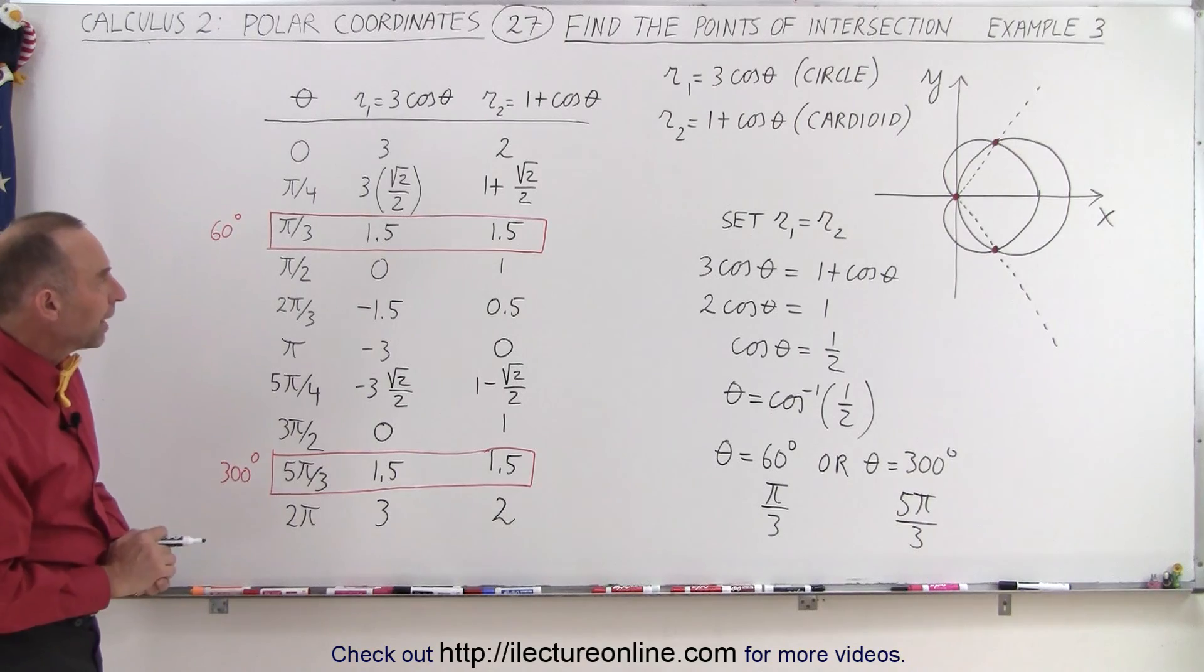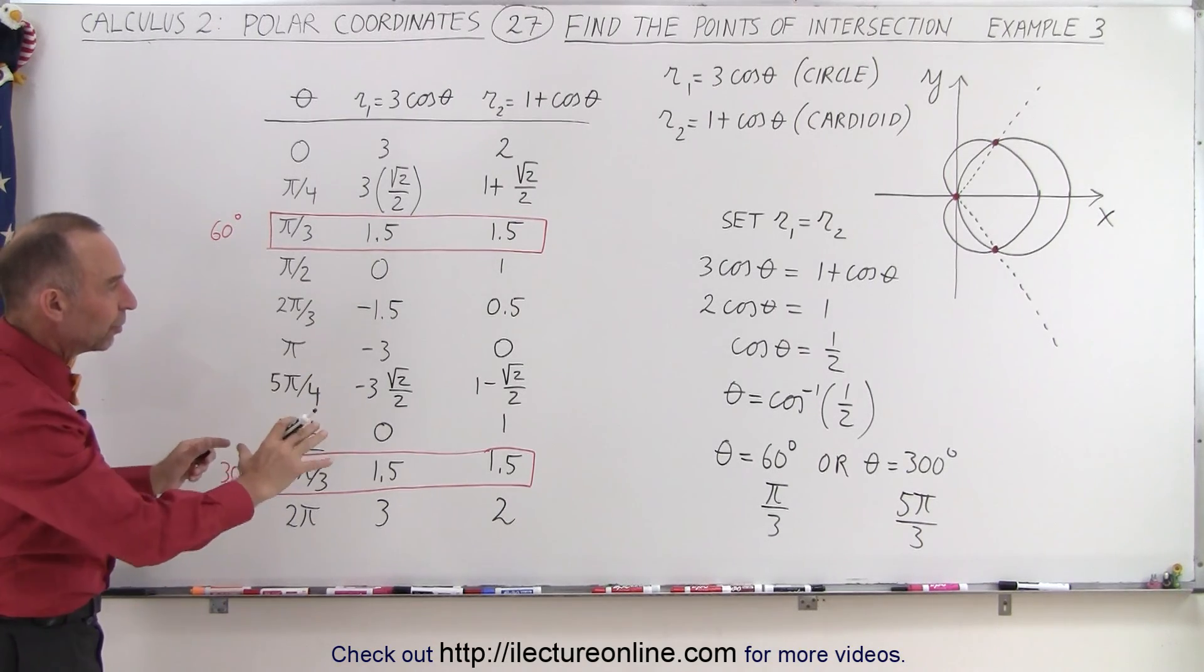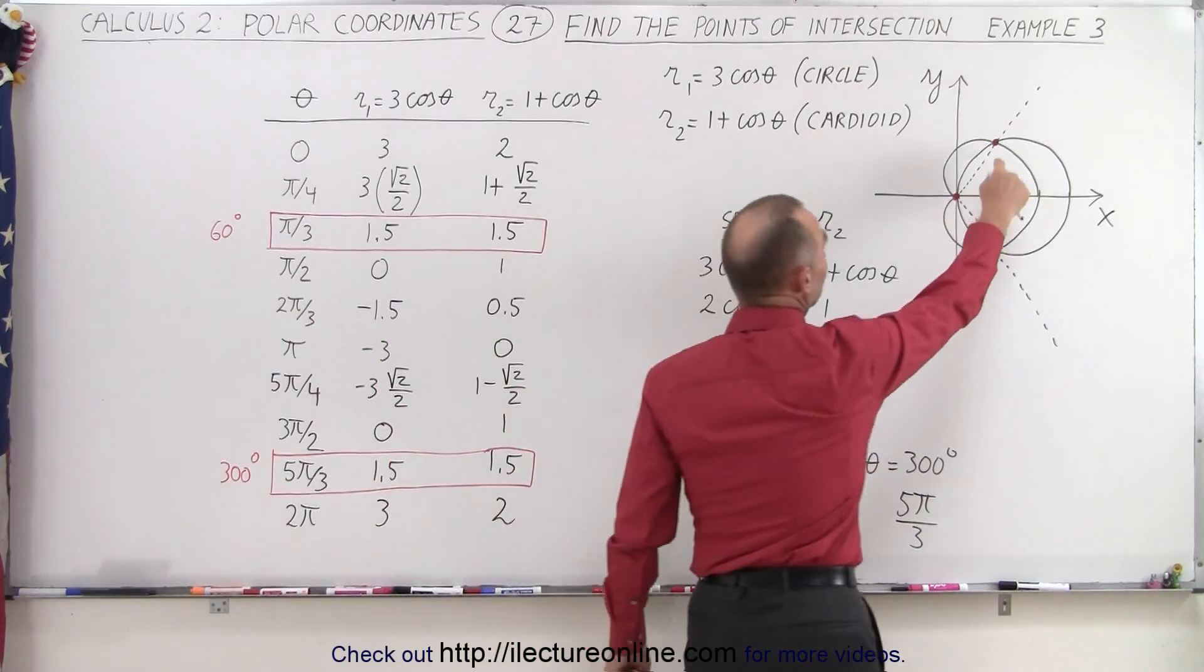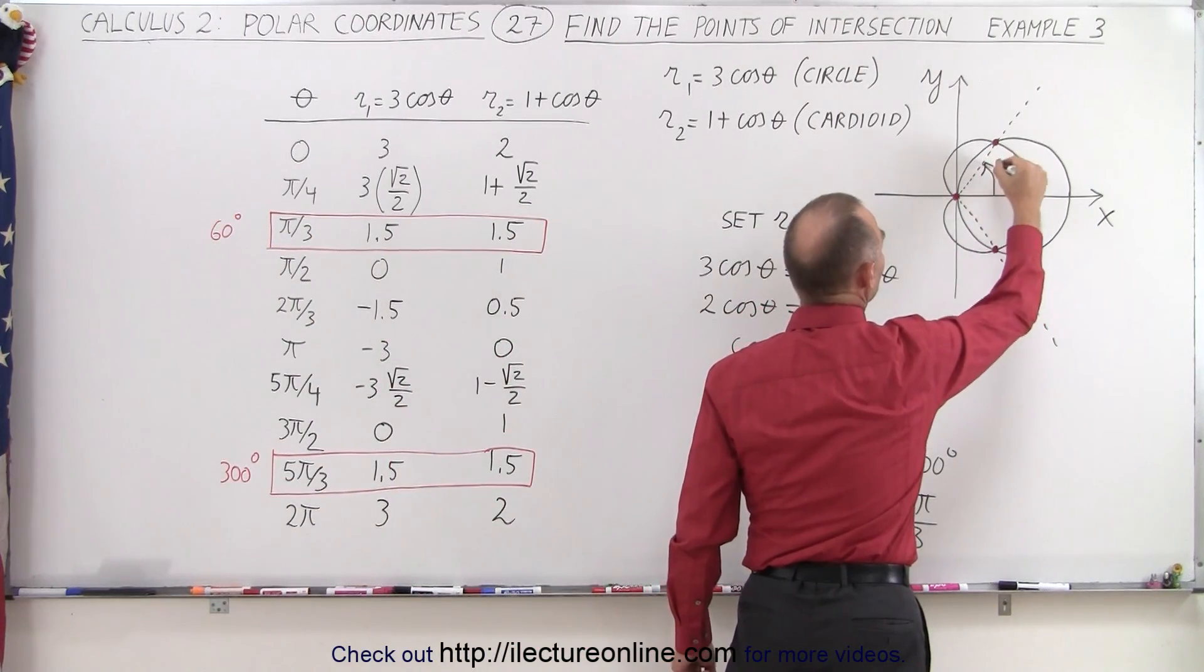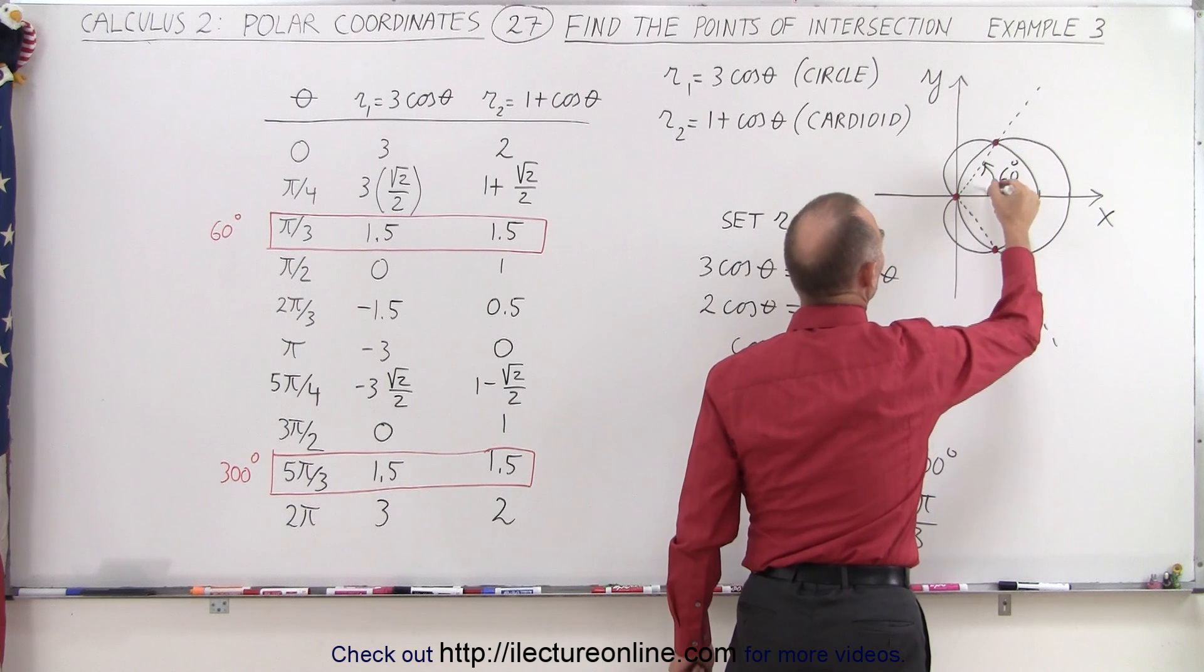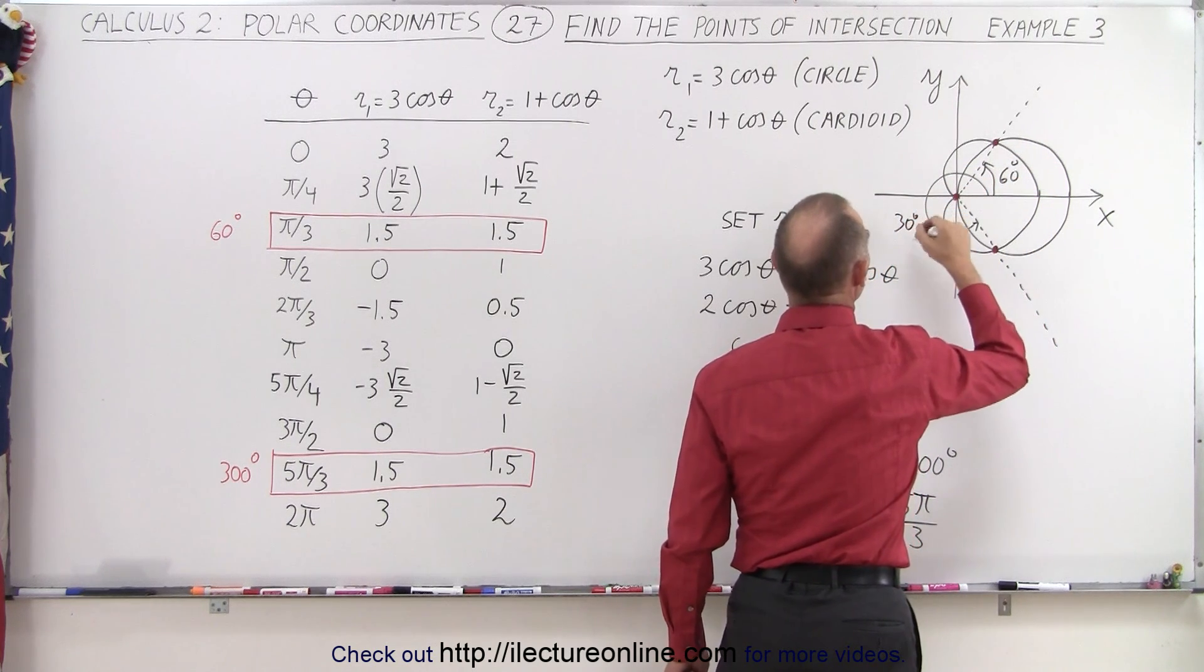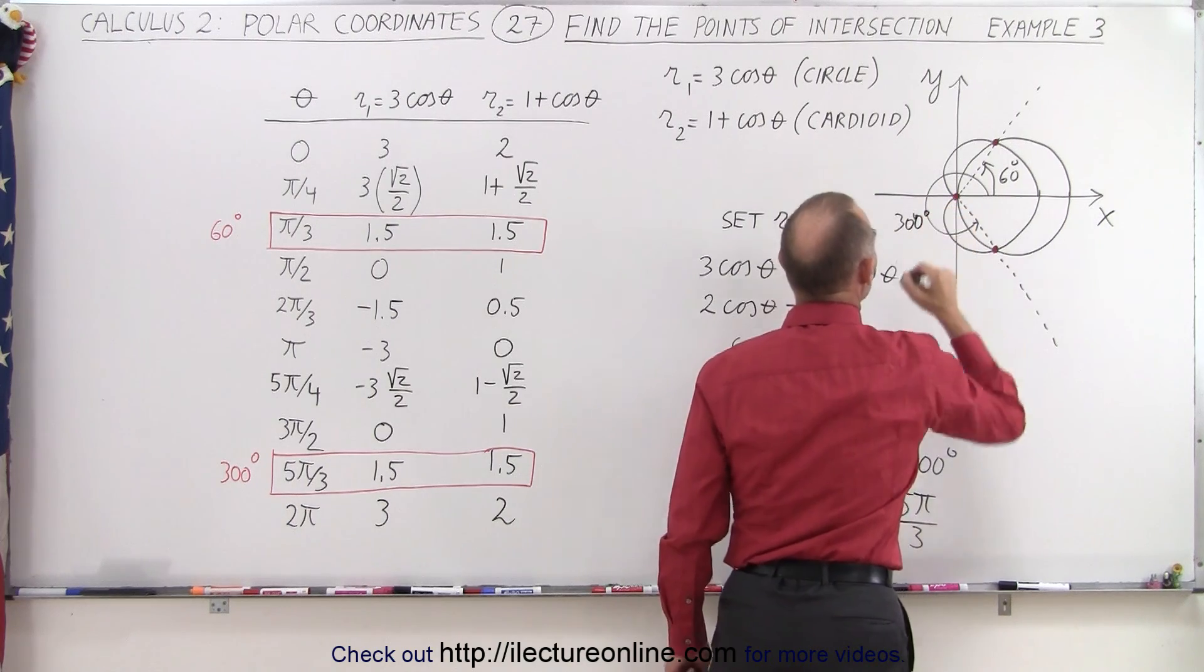Now, when we set up a table of values, again, we end up finding those same two points. Those are these points right here. The one at 60 degrees, so this here would be an angle of 60 degrees. And if we go all the way around this way, that would be an angle of 300 degrees.